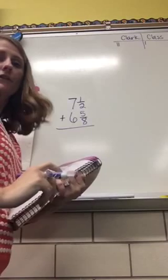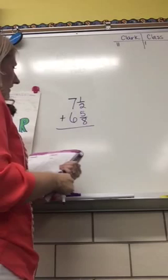I'm going to show you how to add mixed numbers with unlike denominators. This is problem number one from homework 1-9.